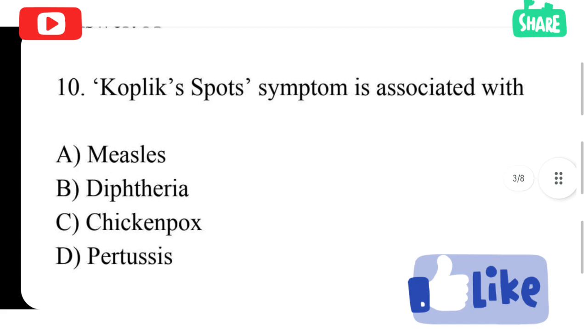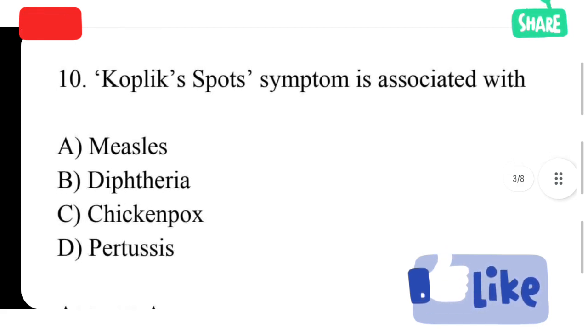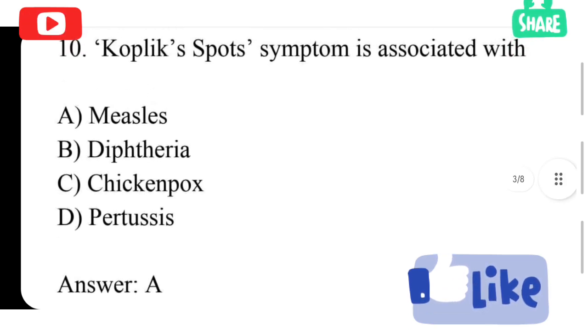Koplik spots symptom is associated with option A measles, option B diphtheria, option C chicken pox, option D pertussis. Option A is correct answer, measles. In measles, Koplik spots symptom contains reddish patches like skin rashes.